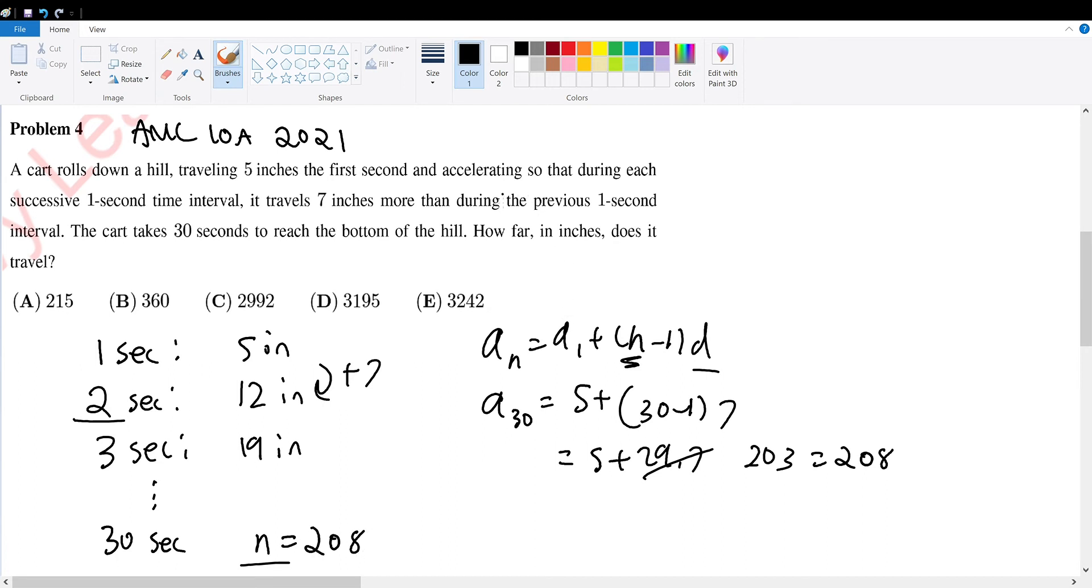Now we're trying to find how far in inches does it travel, so we're trying to find the sum of these 30 numbers. So the sum will be a_1 plus a_n times n divided by 2.